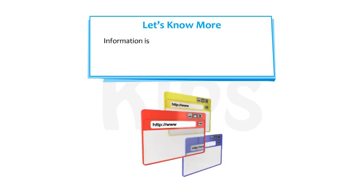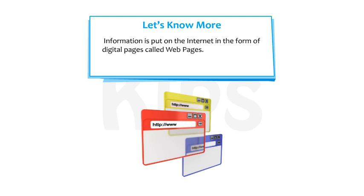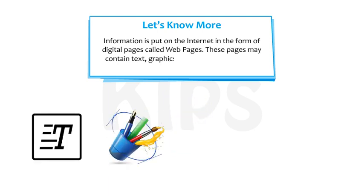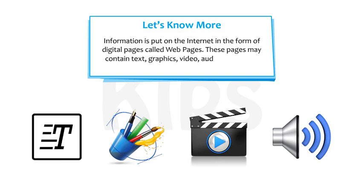Information is put on the Internet in the form of digital pages called web pages. These pages may contain text, graphics, video, audio and links to other pages.